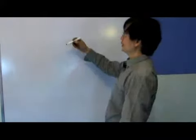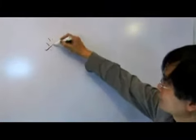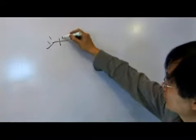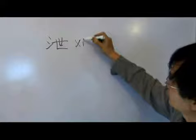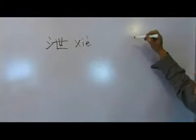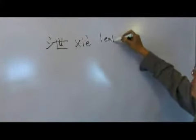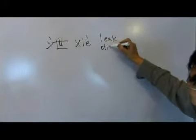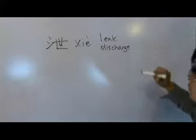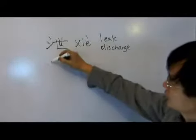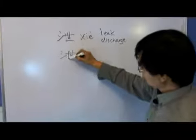The character xie (泄), which means leak or discharge. Xie lu (泄露) is one of the examples for xie.